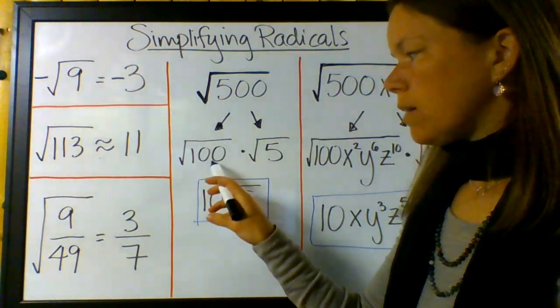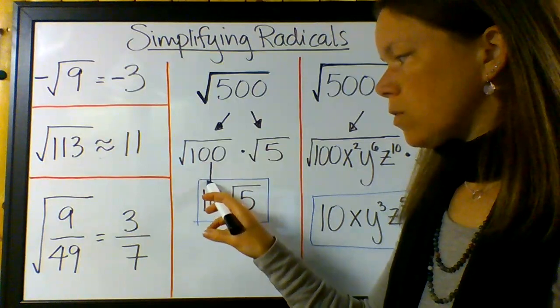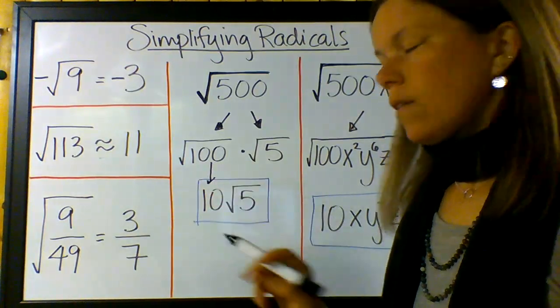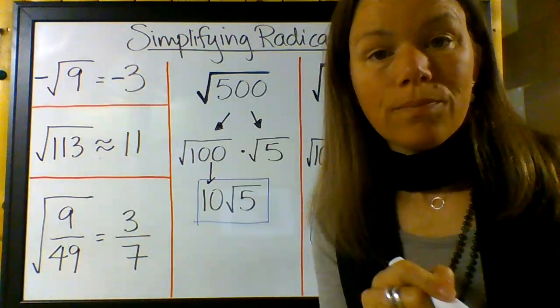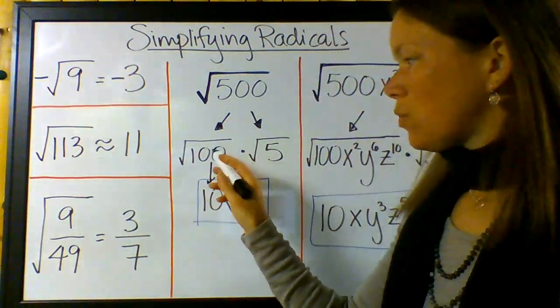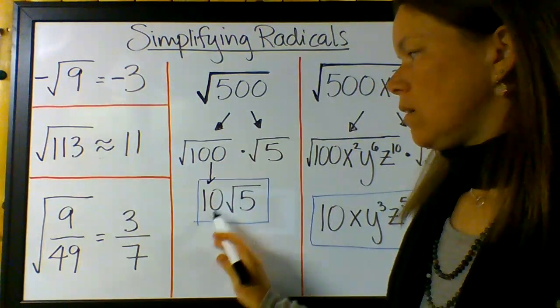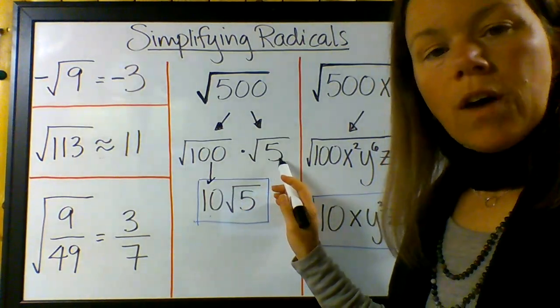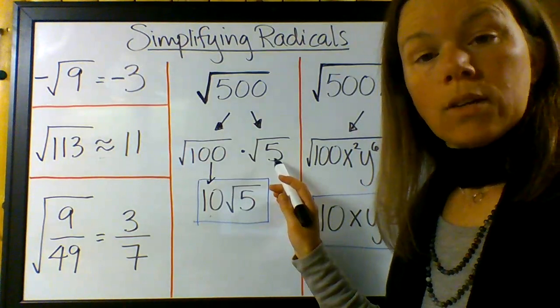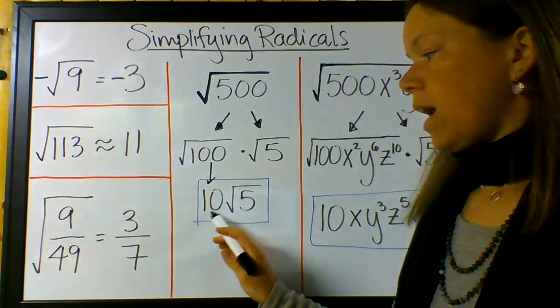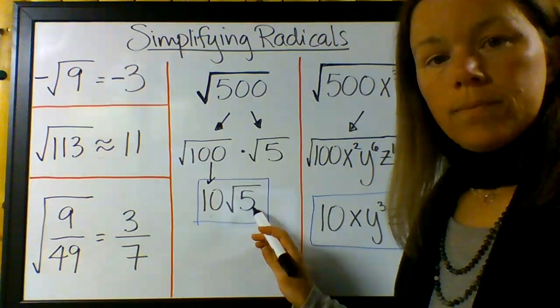And I do that because I want to be able to actually take the square root of whatever's on the left, have the radical do its job on that number, right? Take the square root of it. So, the square root of 100 is 10, and I can't take the square root of 5 without putting it into a calculator, so I'm going to leave it as a radical, and I say this, 10 root 5.